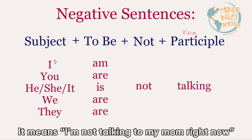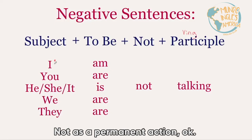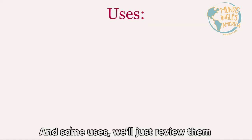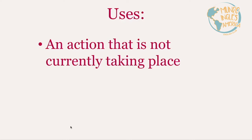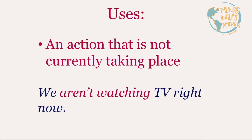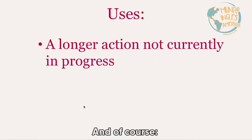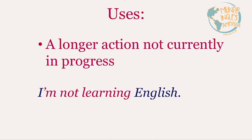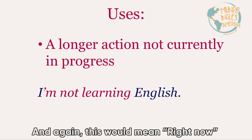Remember, these sentences all mean right now — I don't have to say it but it's implied in the present continuous. When I say 'I'm not talking to my mom,' it means right now, not as a permanent action. The same uses apply: an action not currently taking place — 'We aren't watching TV right now' — or a longer action not currently in progress — 'I'm not learning English' — again meaning right now.